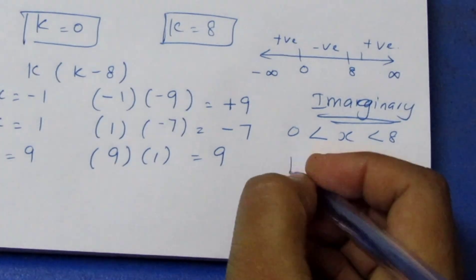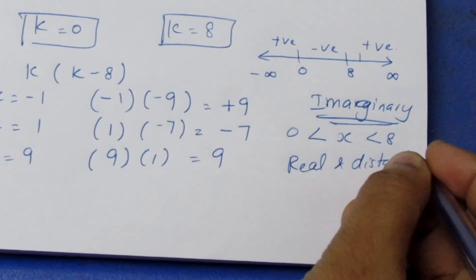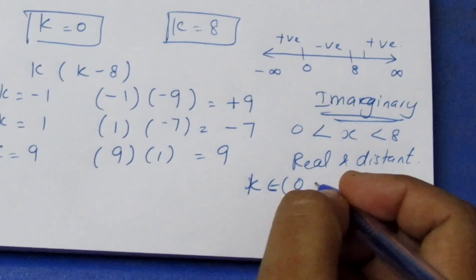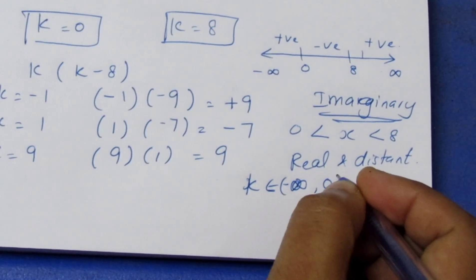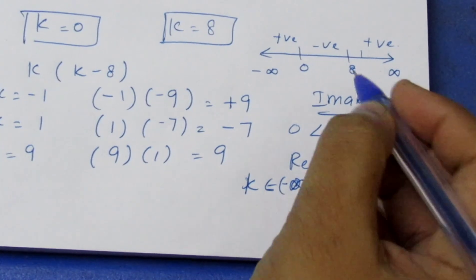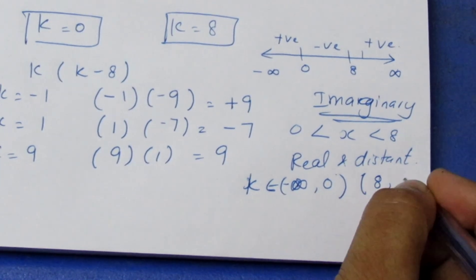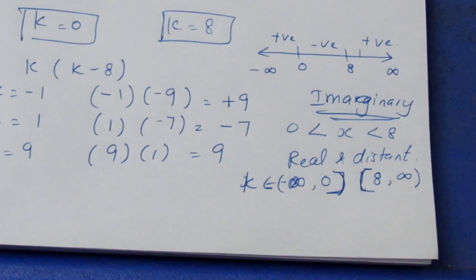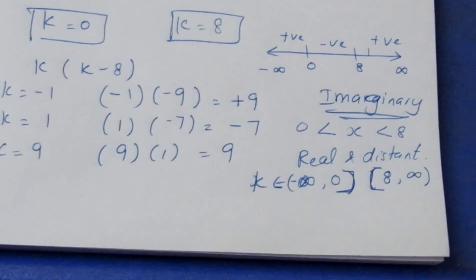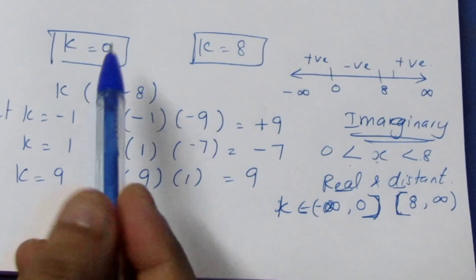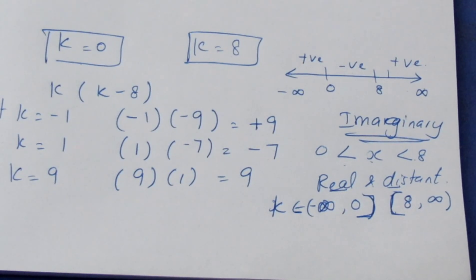Positive discriminant means real and distinct roots. So roots are real and distinct when k belongs to minus infinity to 0, or 8 to infinity — with 0 and 8 included as square brackets. Roots are imaginary when k lies between 0 and 8. This is the complete nature of the roots in terms of k.